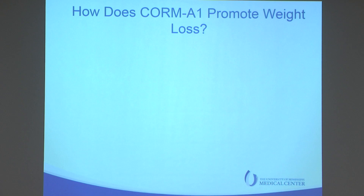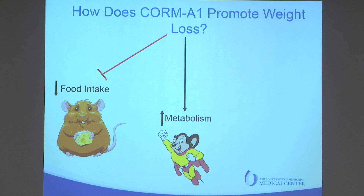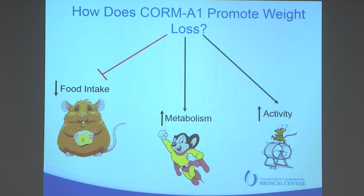So how does CORM promote weight loss? How does carbon monoxide lead to weight loss? There are three different pathways to consider: first, decrease food intake; second, boost metabolism by increasing oxygen consumption and burning more fat; and third, increase activity — making these mice move more. Or maybe it's a combination of two or three of these things. So we looked at these systematically in our studies.